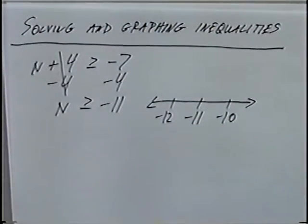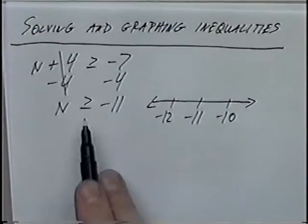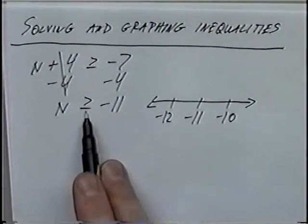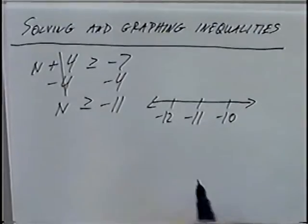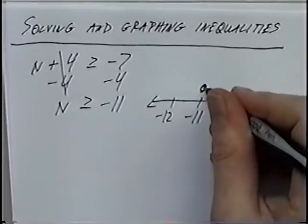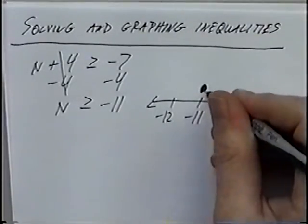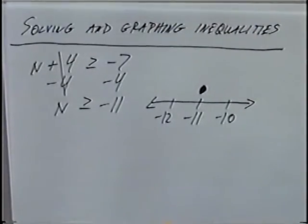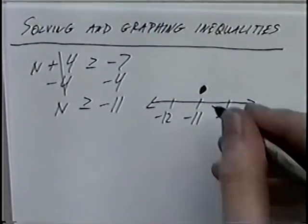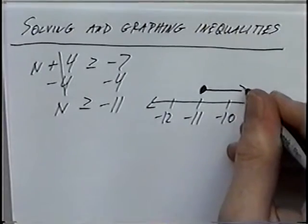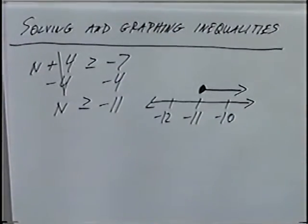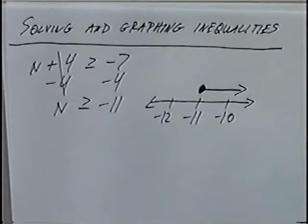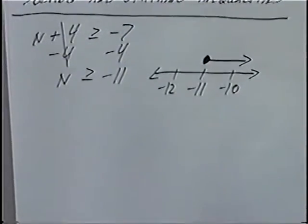For these graphs we have open circles or closed circles. Any time you have the line underneath the inequality — 'or equal to' — that means it's a closed or solid circle. n is greater than or equal to negative 11, so greater than or equal to means the line goes to the right.